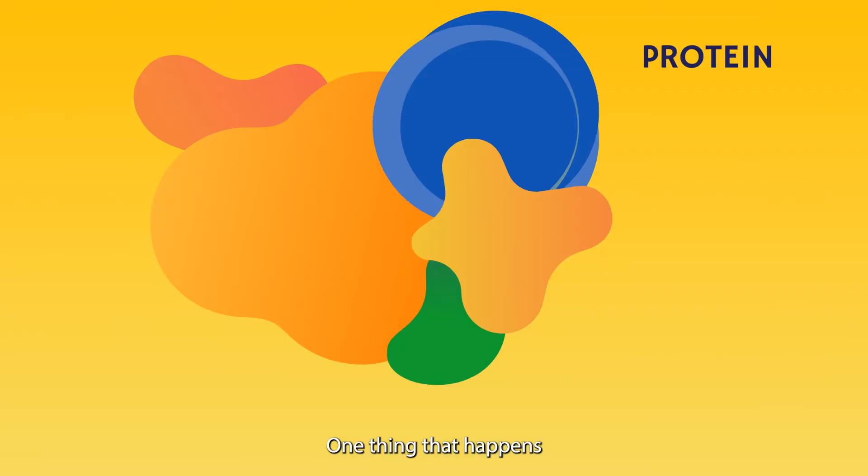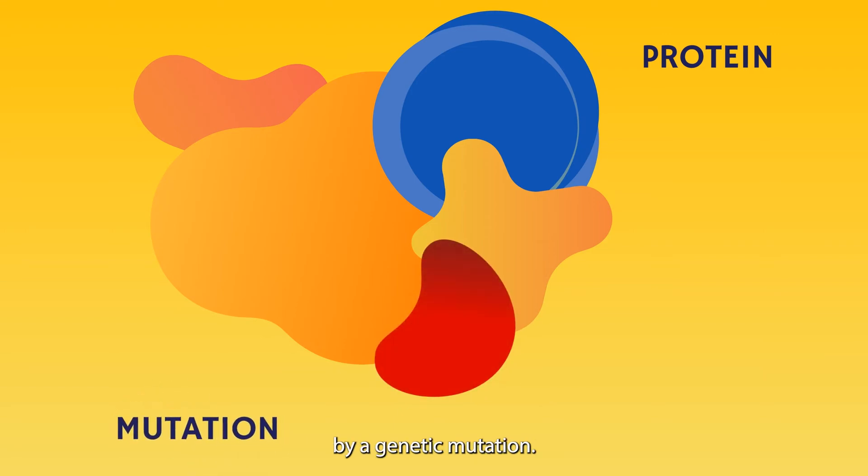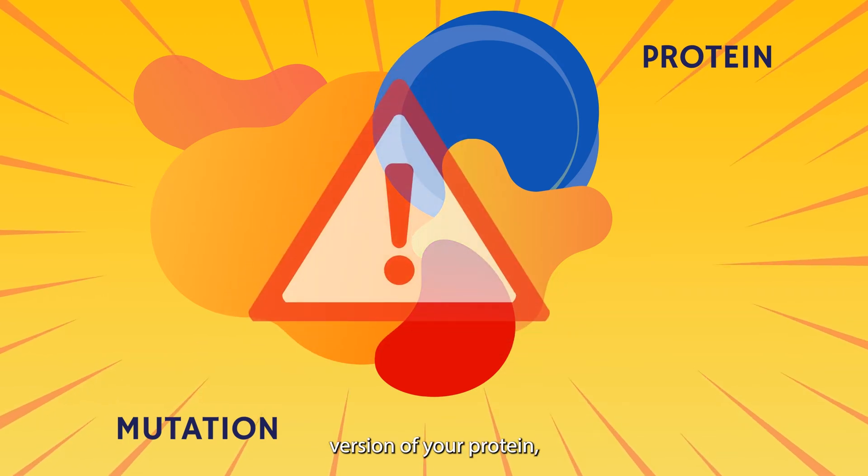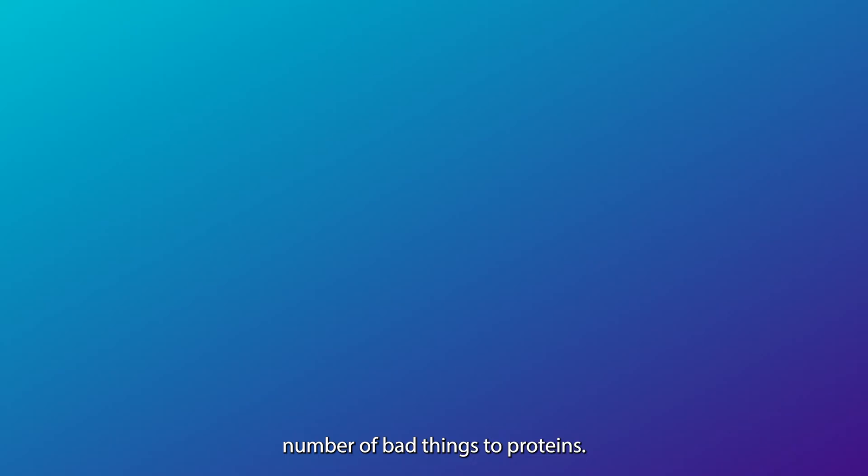One thing that happens when proteins cause disease is that the protein gets modified by a genetic mutation. It's no longer the usual protein. It's a slightly modified version of your protein, and that can do a number of bad things to proteins.